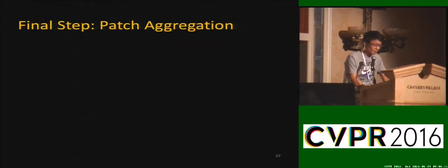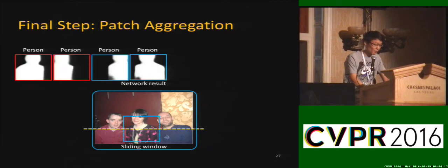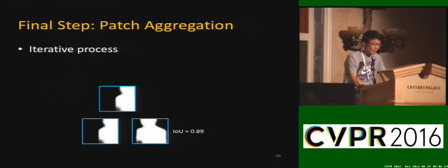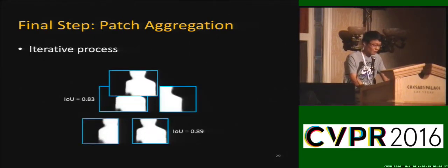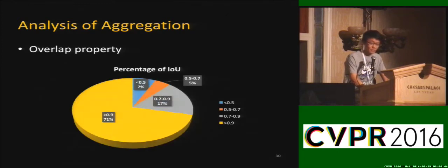Our patch aggregation algorithm is straightforward. We collect patches along scanlines, forming a set of patches with per-patch segmentation and labeling information for different instances. We then select patch pairs with the maximum IoU value and merge them together. This is an iterative process until the overlap score of remaining patch pairs falls below a threshold. Around 88% of patch pairs have IoU higher than 0.7, meaning patches capture enough object segment information for reliable inference.